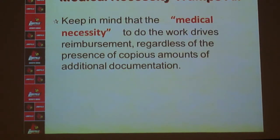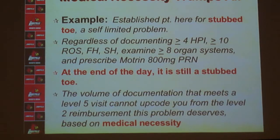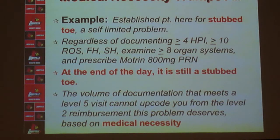No matter how much you document, medical necessity should drive the reimbursement that you deserve, not copious amounts of documentation. For example, if a patient comes in and all they have is a stubbed toe, it doesn't matter that you document it by more than four descriptors, review more than ten systems, take a full family and social history, examine more than eight organ systems, and prescribe high-dose Motrin. At the end of the day, it is still just a stubbed toe. Despite the volume of documentation meeting a Level 5 visit, you cannot upcode from the Level 2 reimbursement that medical necessity dictates.